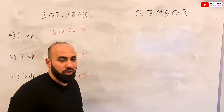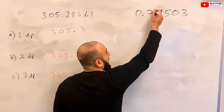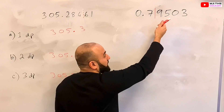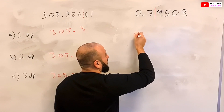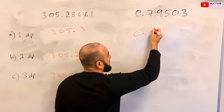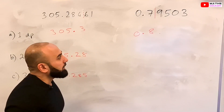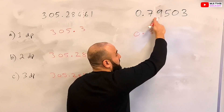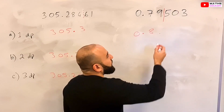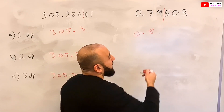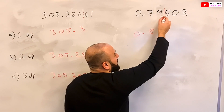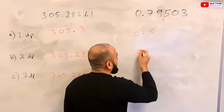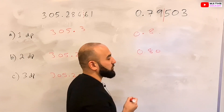The number 0.79503 rounded to one decimal place: we draw a line after the first digit after the decimal point and look at the number next to it. It's 5 and above, so we change the 7 to an 8. Our answer is 0.8. To two decimal places, we draw a line after the 9. The number next to the 9 is a 5, so we will change it — we can't change 9 to a 10, so we change 79 to 80. The answer is 0.80 to two decimal places.